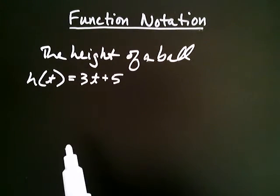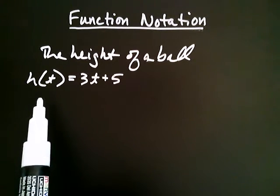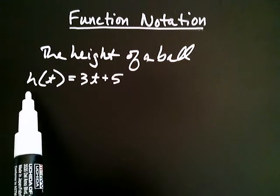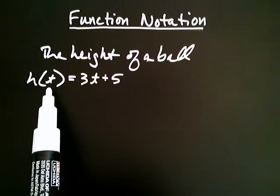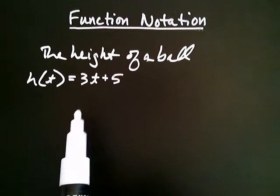These symbols look a little new to us or they're being used in a new way. The way we read this in mathematics is as follows: the height at a given time is equal to 3 times that time plus 5.